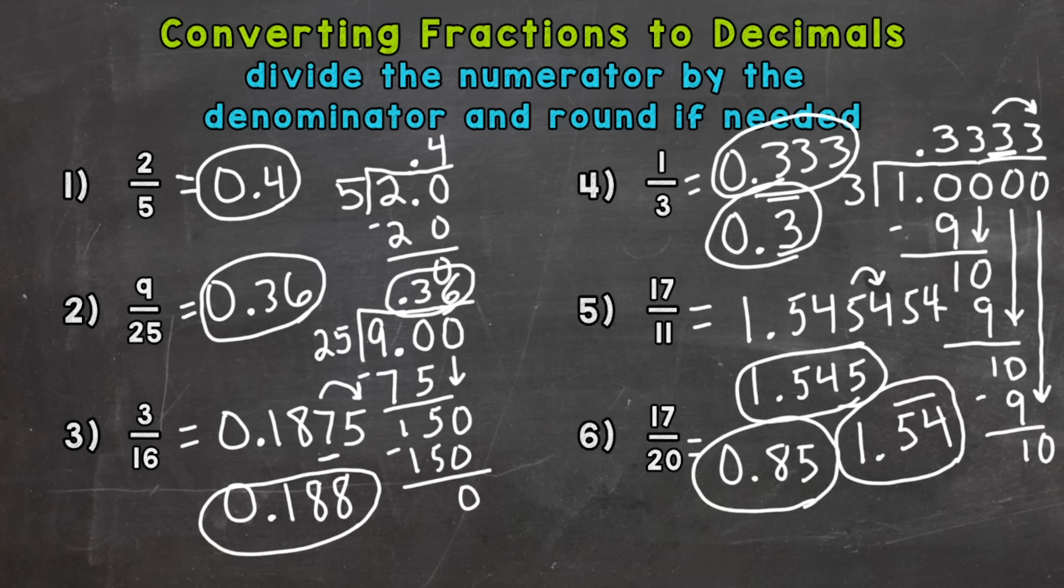So there you have it. There's how you convert a fraction to a decimal. Divide the numerator by the denominator. And then interpret your answer. Do you need to round? Is it a repeating decimal? Or maybe it cuts off in the tenths, hundredths, or thousandths place.